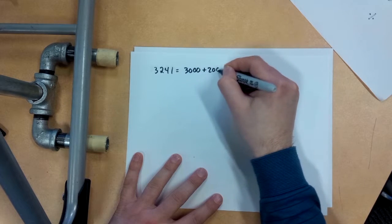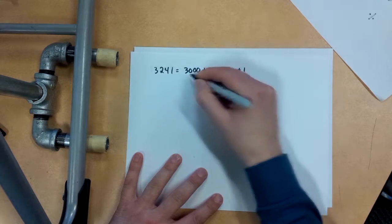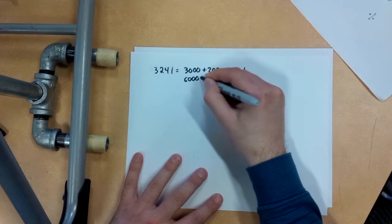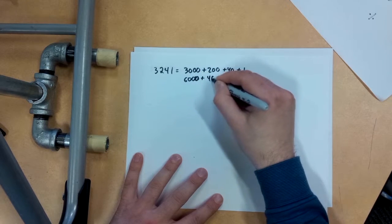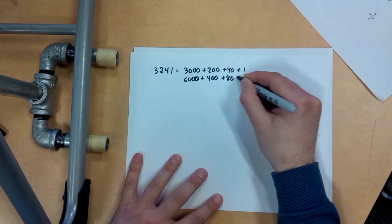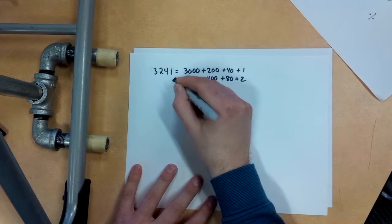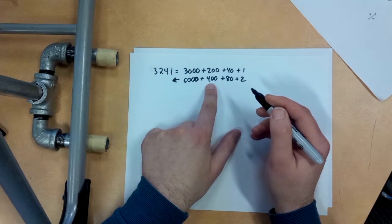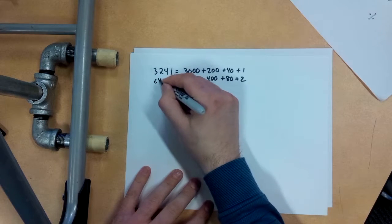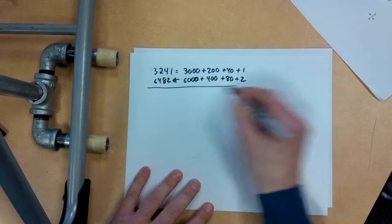Doubling it three times. 3,000 plus 200 plus 40 plus 1. Double that, so I'm going to have 6,000 plus 400 plus 80 plus 2. So I'm going to bring it back, 6,482.